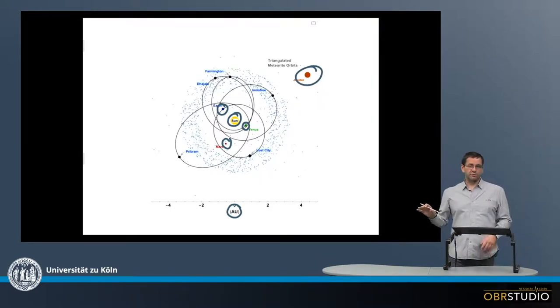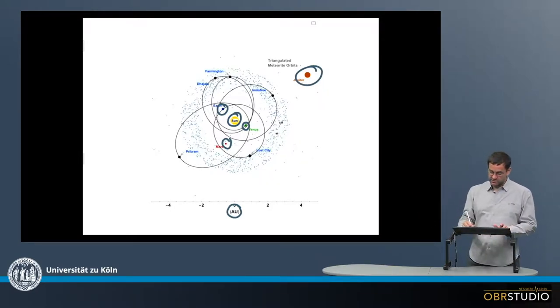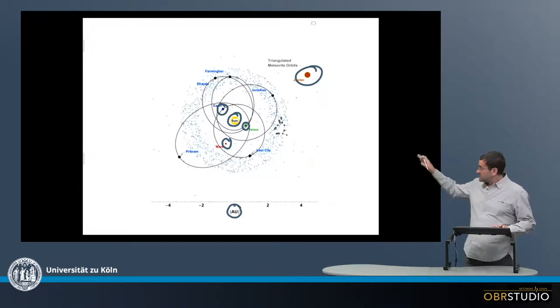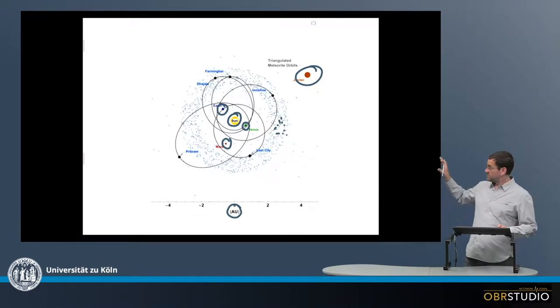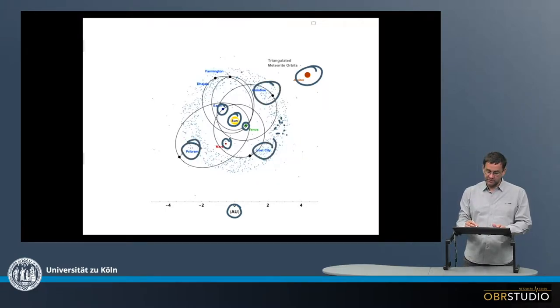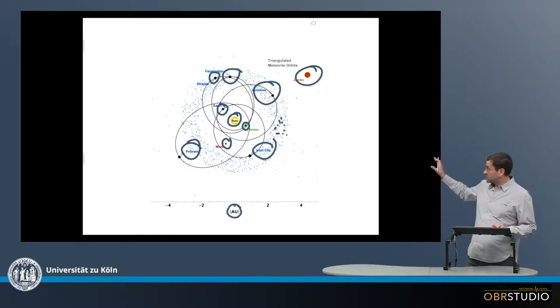And all the little blue dots in here are the asteroids around. And then we have the orbits of these five meteorites here. These are all ordinary chondrites, the largest group of meteorites. There's Pribram, Lost City, Innisfree, Farmington, and Jayala.